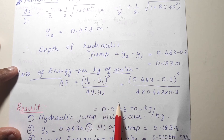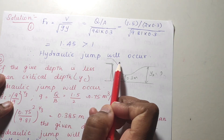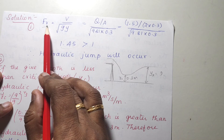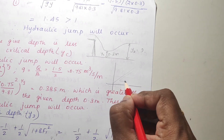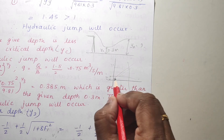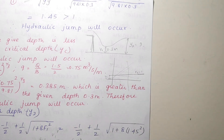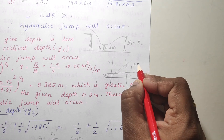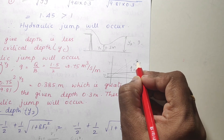The loss of energy delta E equals (y2 minus y1) cubed divided by 4·y1·y2. Substitute all values to find delta E. There is also another method to find whether the hydraulic jump will occur: using the specific energy curve. On the specific energy curve, at critical depth yc, the Froude number equals 1. Below critical depth, the Froude number is greater than 1 — that is supercritical flow. Above critical depth, the Froude number is less than 1 — that is subcritical flow.